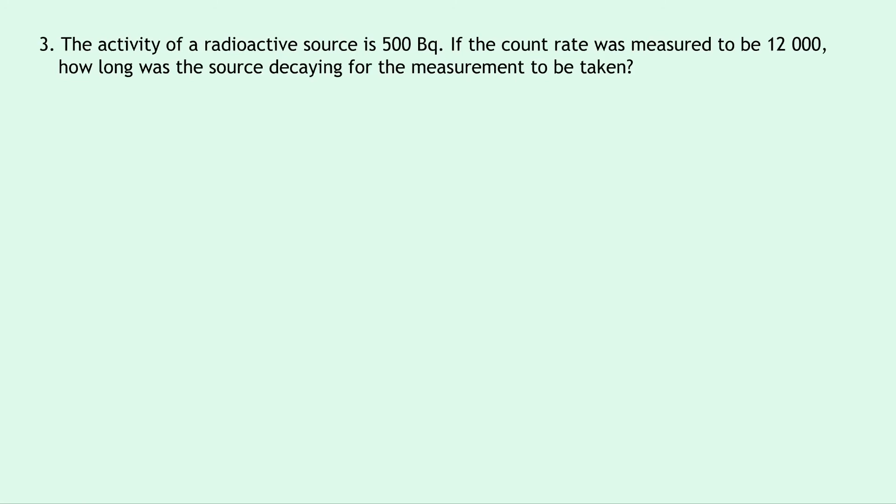Question three says that the activity of a radioactive source is 500 becquerels. If the count rate was measured to be 12,000, how long was the source decaying for the measurement to be taken? Well writing down what we know from the question, we're trying to find the time. We know the number of decays is 12,000 and we know the activity is 500 becquerels.